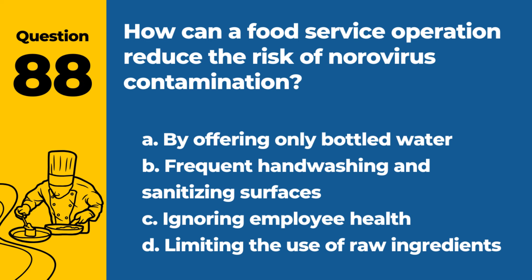Question 88. How can a food service operation reduce the risk of norovirus contamination? a. By offering only bottled water. b. Frequent hand-washing and sanitizing surfaces. c. Ignoring employee health. d. Limiting the use of raw ingredients. Answer: b. Frequent hand-washing and sanitizing surfaces. Good hygiene practices are essential to prevent norovirus contamination.